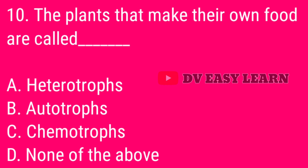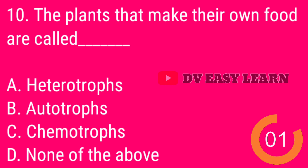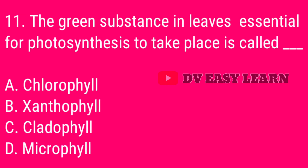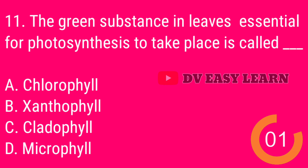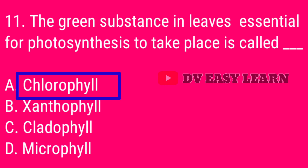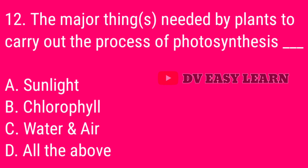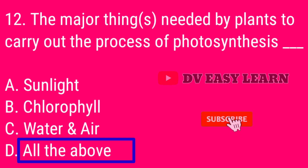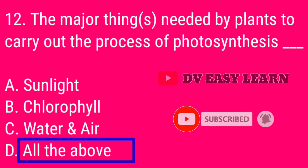Question 10. The plants that make their own food are called Autotrophs. Question 11. The green substance in leaves essential for photosynthesis to take place is called Chlorophyll. Question 12. The major things needed by plants to carry out the process of photosynthesis are: Sunlight, Chlorophyll, Water and Air.